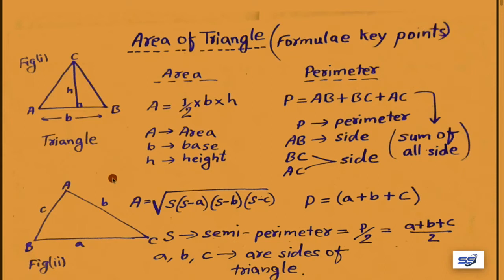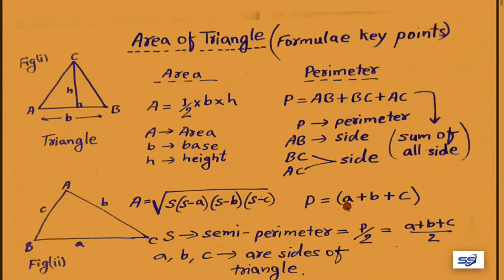Using this formula, we can easily find the area of any triangle when base and height are not given but all three sides are given. Then A equals root under s(s minus a)(s minus b)(s minus c). We also know that the perimeter always equals the sum of all sides: P equals a plus b plus c.